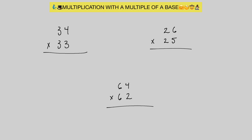Alright, multiplication with a multiple of a base number. In our first example we have 34 times 33. Normally if we're doing multiplication near a base number, we write down the base. In this case we're using base number 30. Normally our base numbers are a 1 followed by any number of zeros — 10, 100, 1000 — but here we are working with a multiple of a base, meaning a base number multiplied by a number. So 10 times 3 gives us 30, meaning 30 is a multiple of the base number 10.